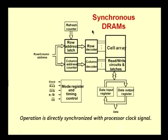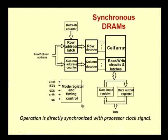Nowadays we use what are called synchronous DRAMs. In synchronous DRAMs, a clock signal is used — the operation of the memory is synchronized with the processor clock signal. You have a clock signal given in addition to the RAS, the CAS, and the read/write and chip select signals. There is a separate control unit responsible for the timing and control, which takes the clock as input.